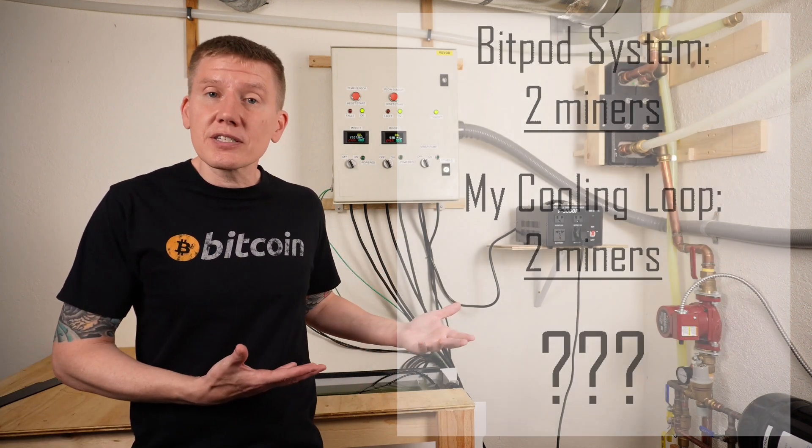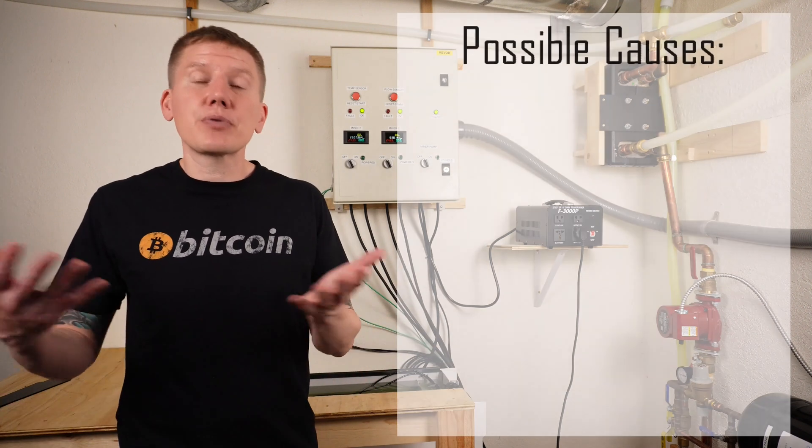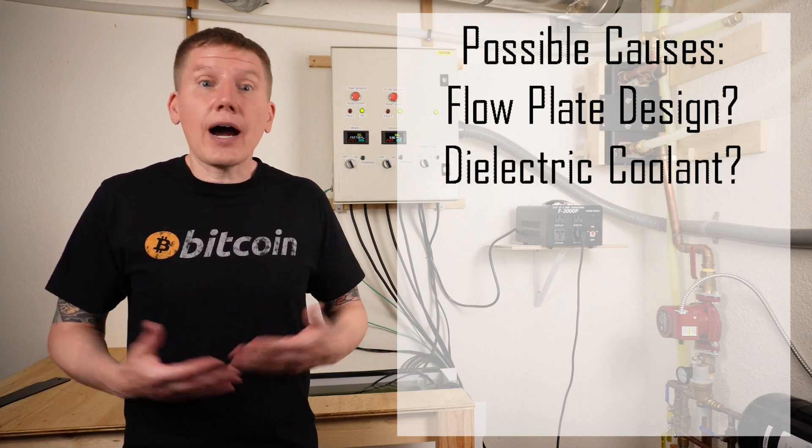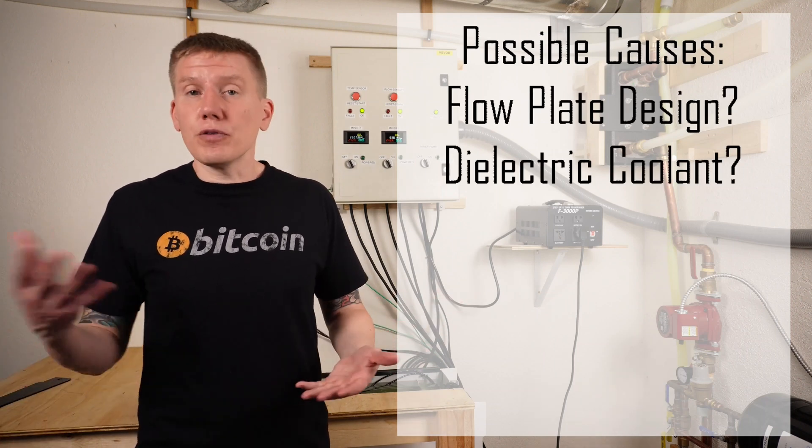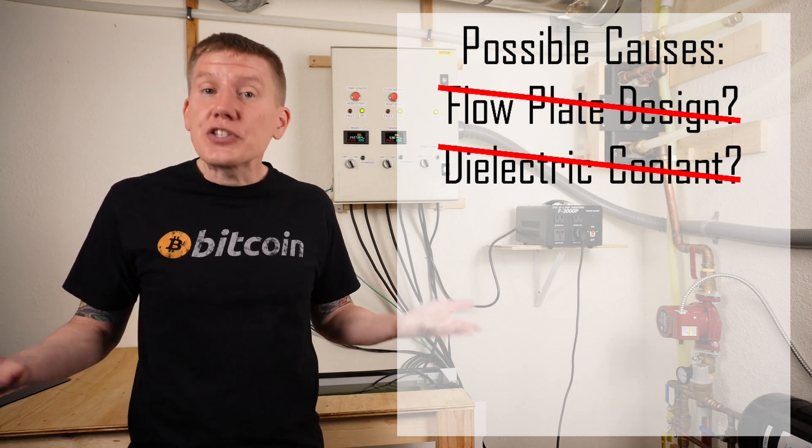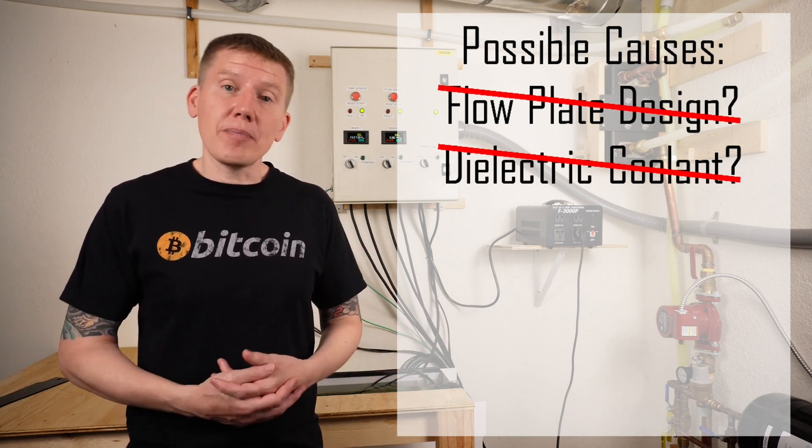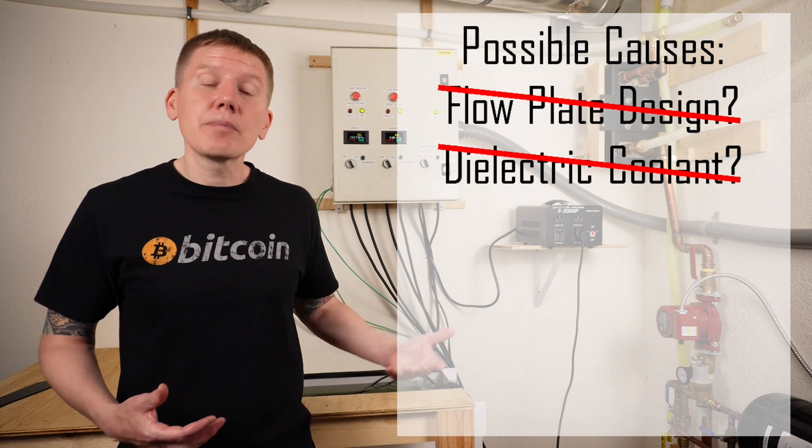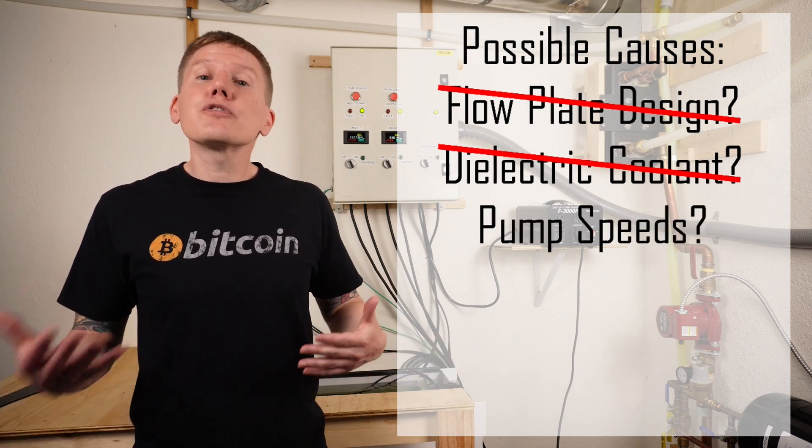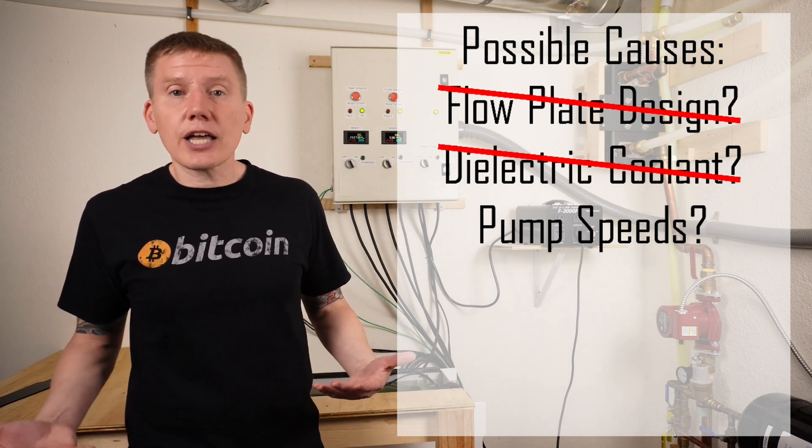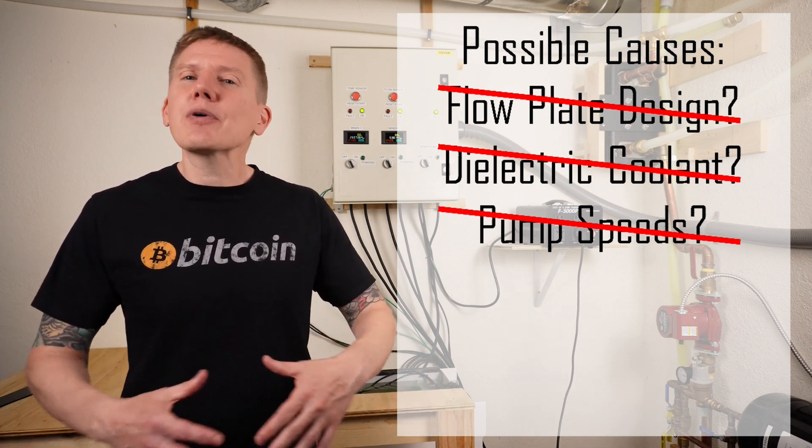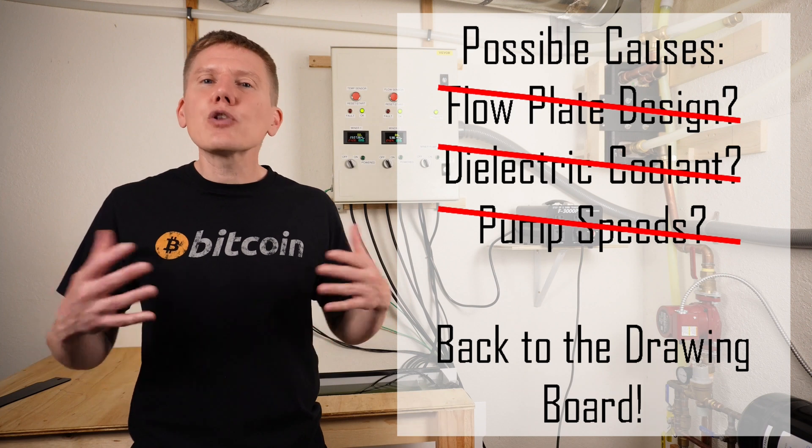Well, I started playing with my system to try and figure out why it was overheating. Now in my previous design, my flow plate had a fairly open arrangement, and I was using BitCool. So I decided to try that here. I removed the restrictive flow plate, and I replaced the fluid with BitCool, and that really didn't change anything. Everything was still overheating in roughly around 30 minutes. Now in my previous system, I had a different pump for my dielectric fluid, so I thought maybe it was pump speeds. So I altered the pump speeds both on the coolant side and the dielectric side. And again, no difference. The system was still overheating. So at that point, I realized I'm going to have to take a step back and really look at what's going on here.